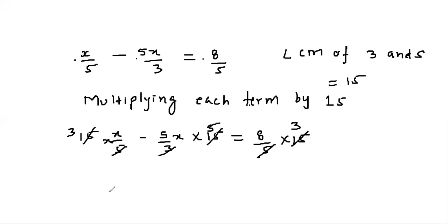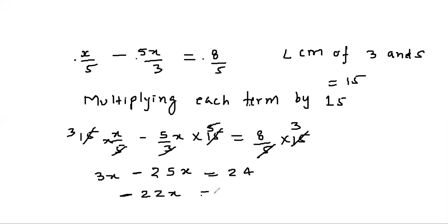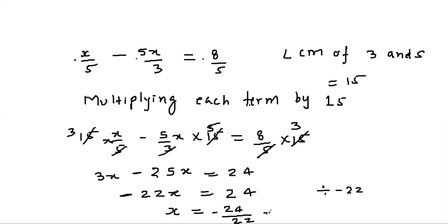Simplifying: 3x - 25x = 24, so -22x = 24. We divide each term by -22, so x = 24/(-22), which simplifies to -12/11. That is our answer.